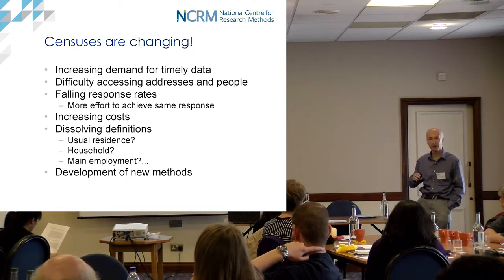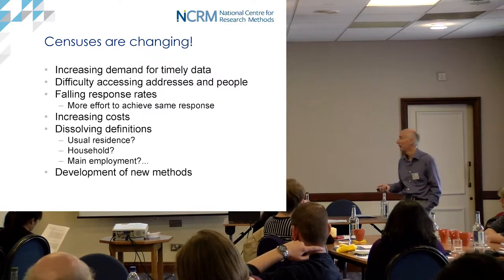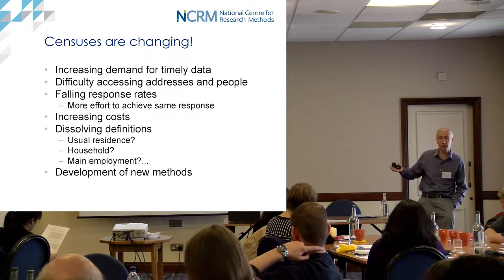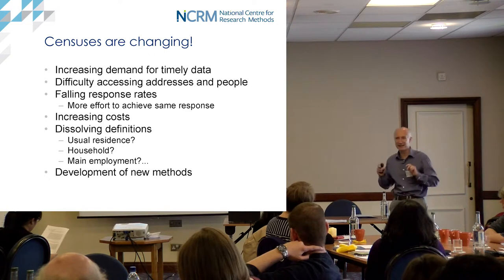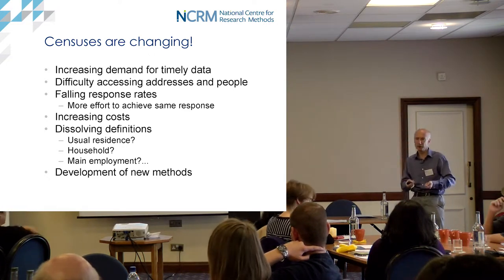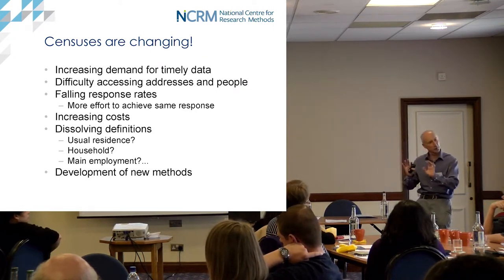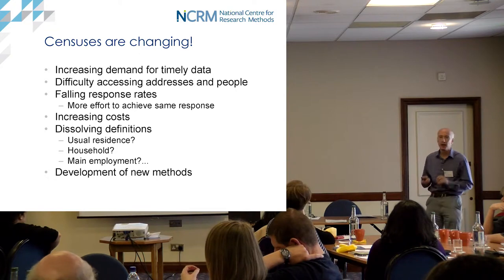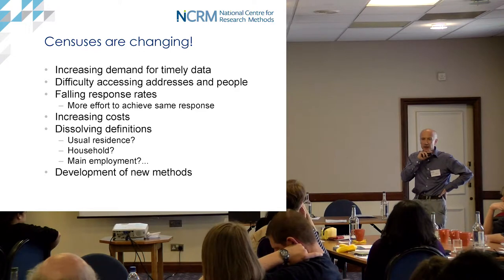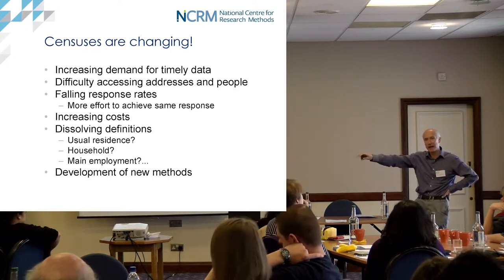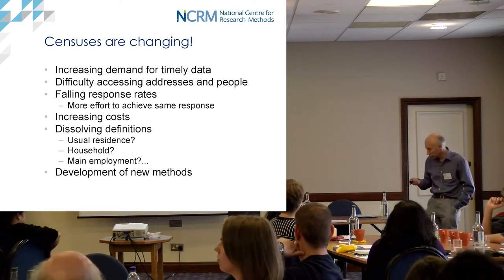There's a second challenge I've called 'dissolving definitions.' The traditional way of collecting census data assumes stability of a set of core concepts. But for lots of people, the idea of 'usual residence' is far from straightforward - for example, kids who split time between two parents on a complex rota. The definition of a household is also under pressure - young adults in shared arrangements. And what people do for their main employment, working in the gig economy, changes rapidly.